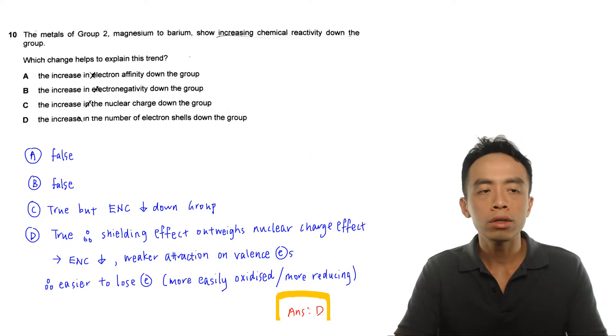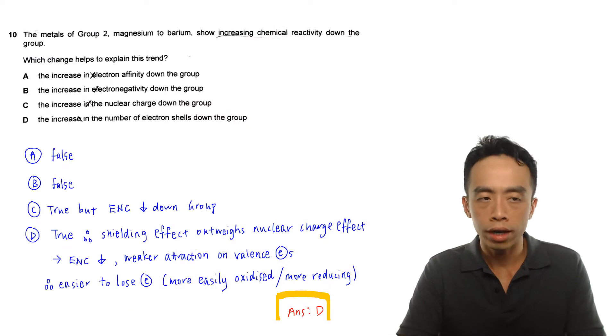Hi guys, this is Maverick Pua the chemistry guru. In this video we want to go through the suggested solution for the 2019 A-levels H2 Chemistry Paper 1, Question 10. Let's take a look at Question 10.